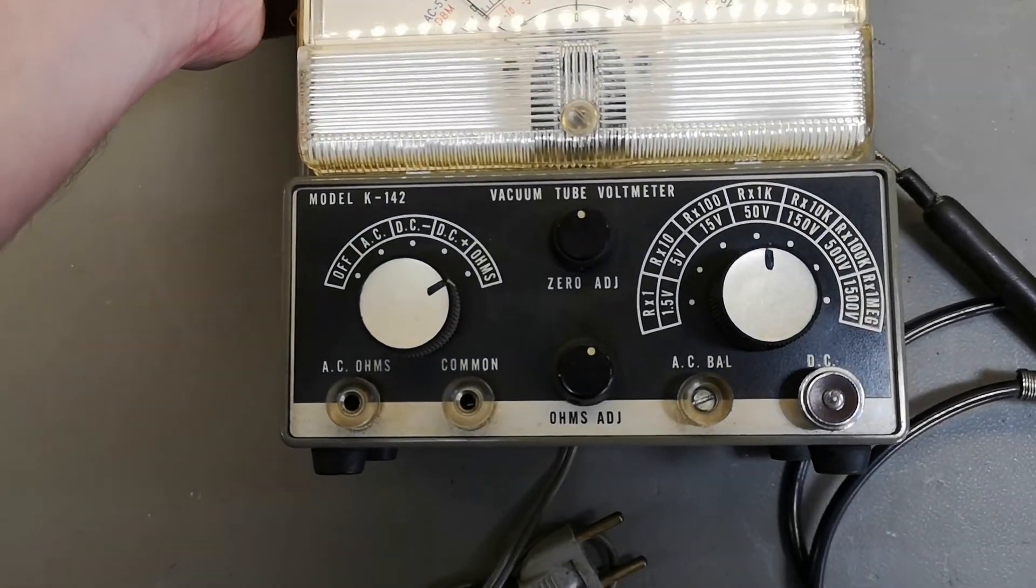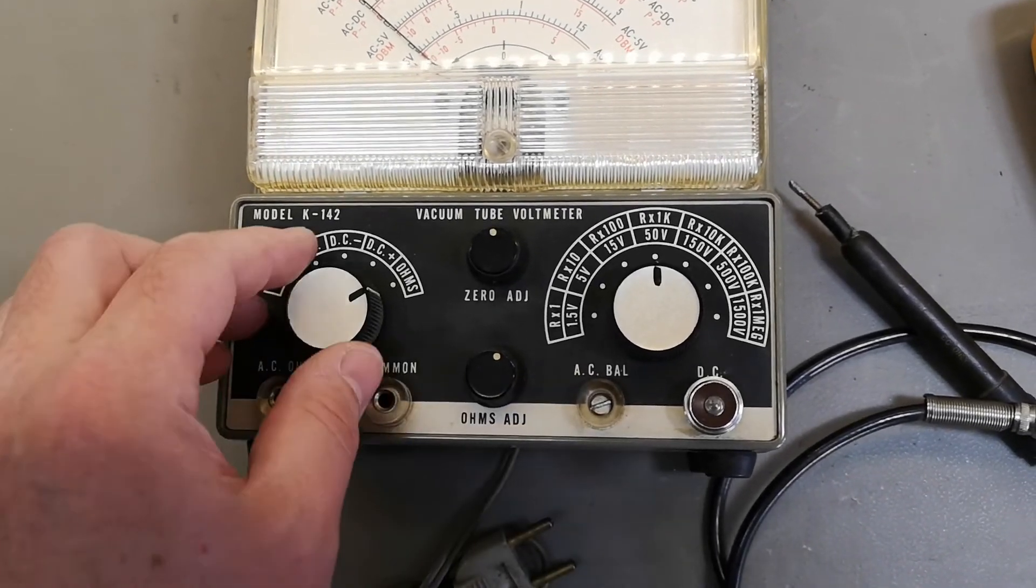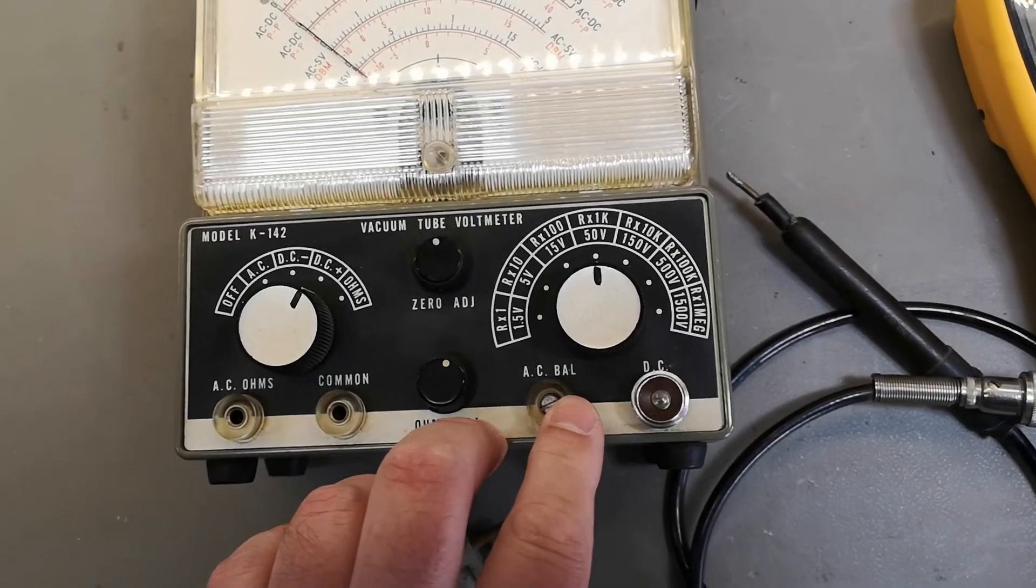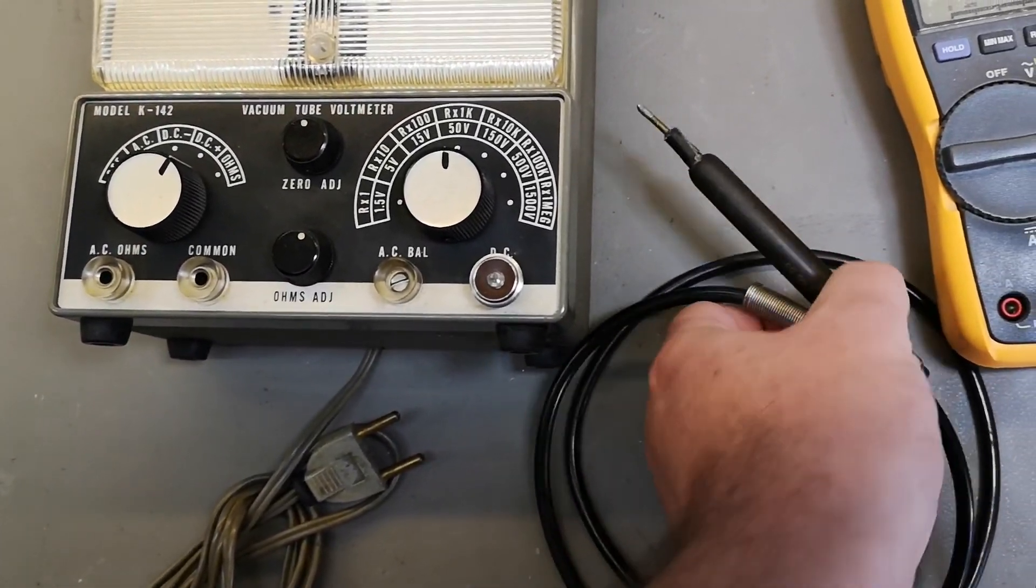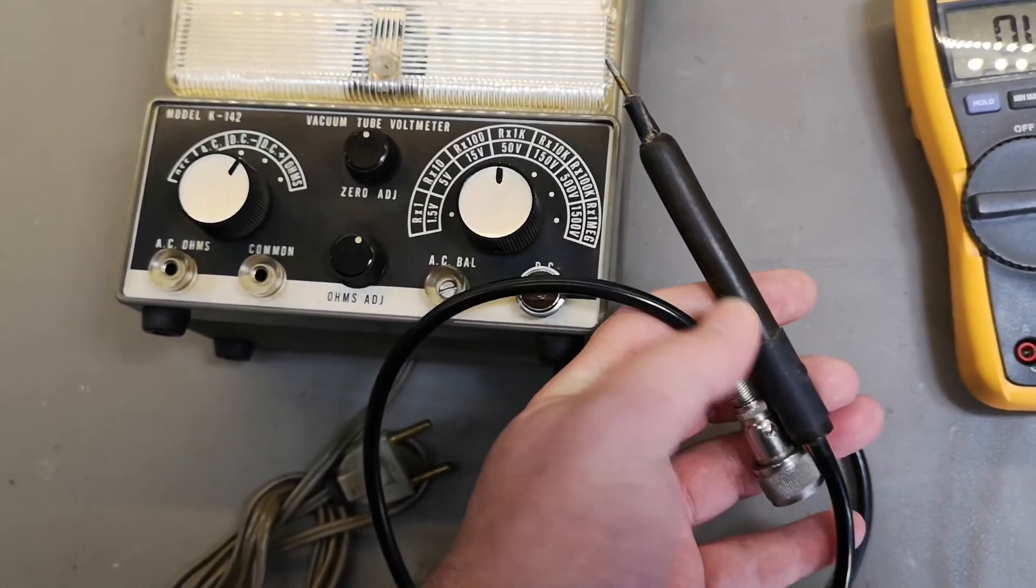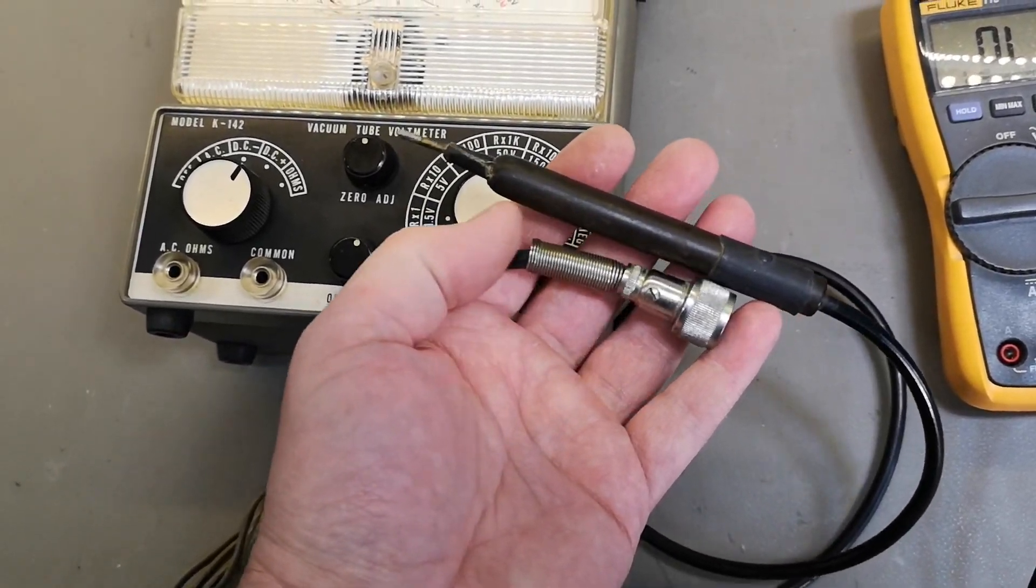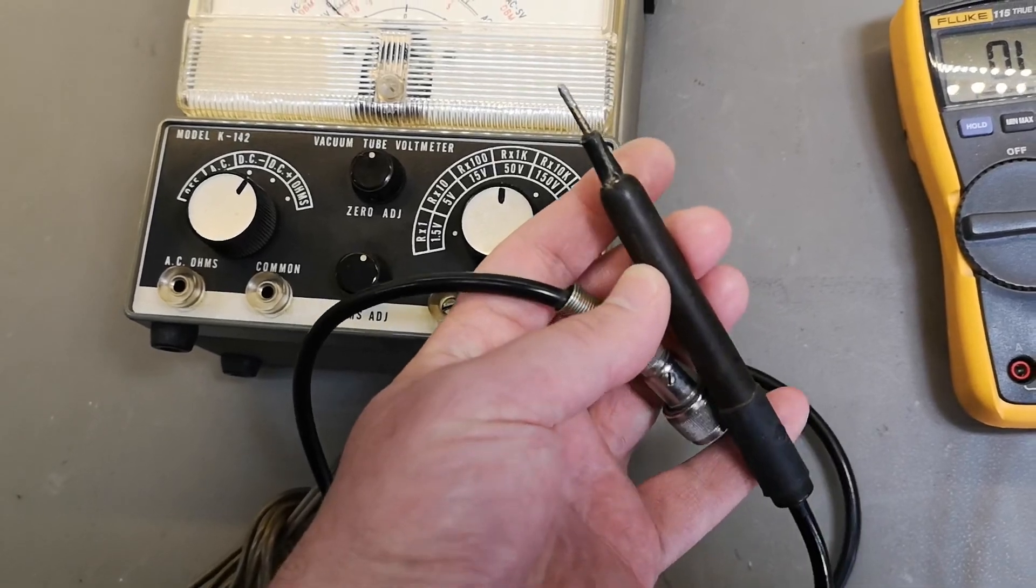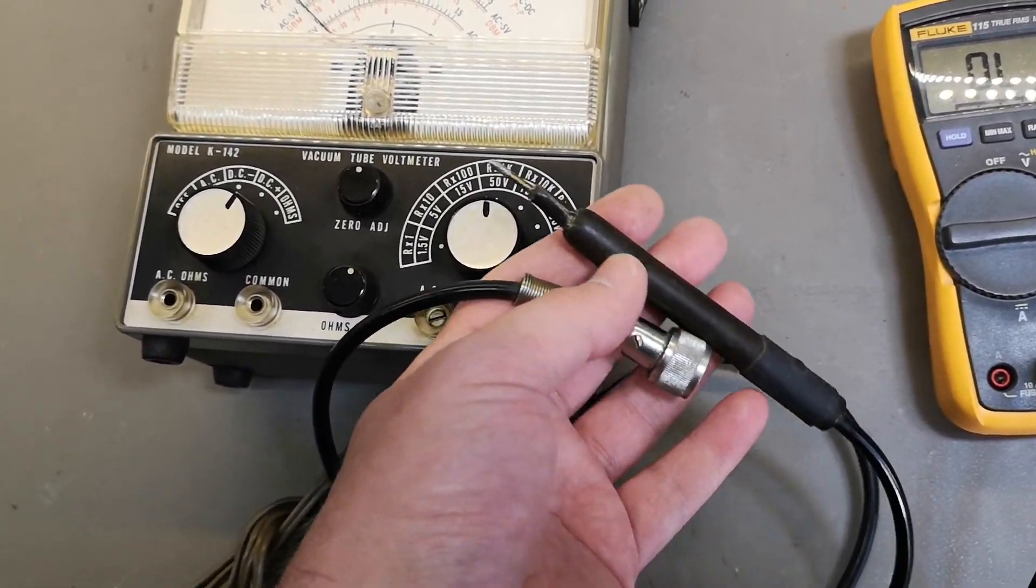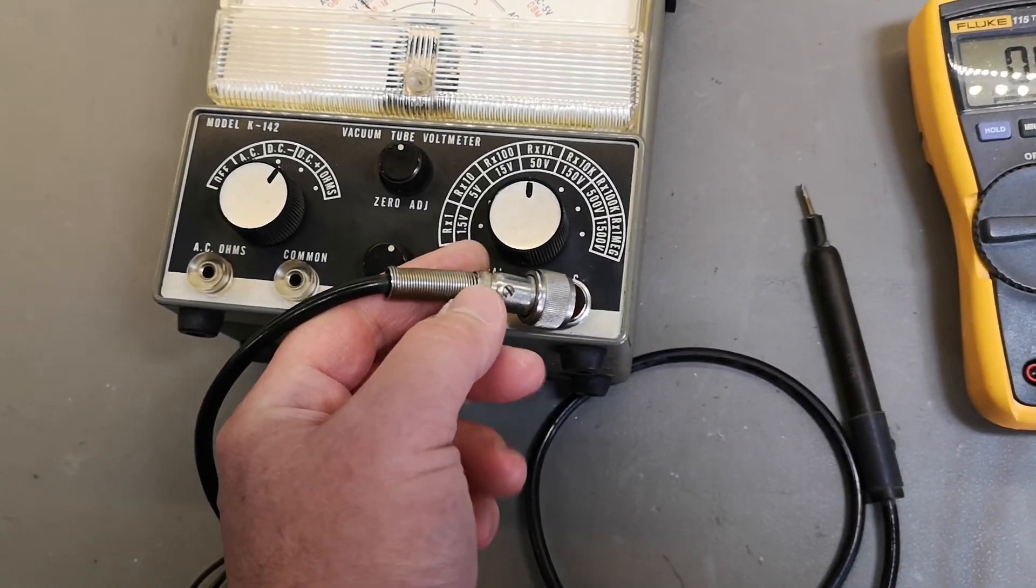So this can measure three things. Look at this really sexy test probe for DC voltages - it's nice and shielded. There is a one megaohm resistor in here for protection or loading of the circuit you're measuring. It seems to have pretty good contact when you screw this on.